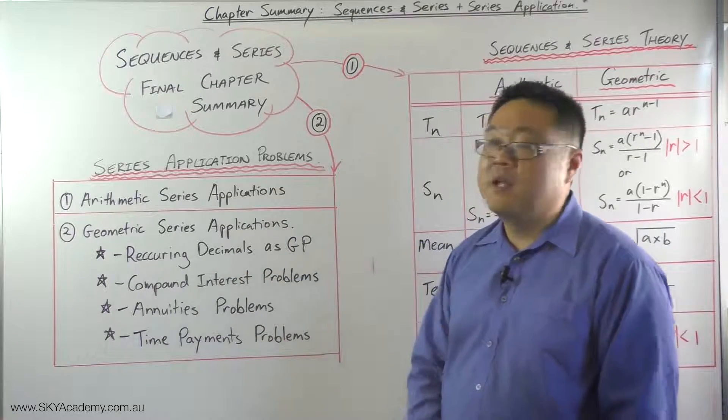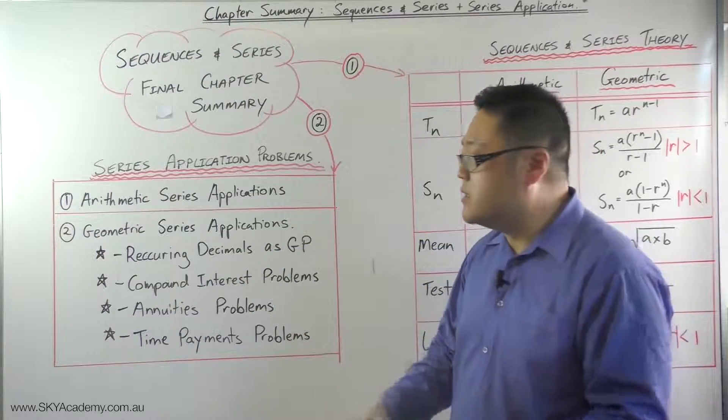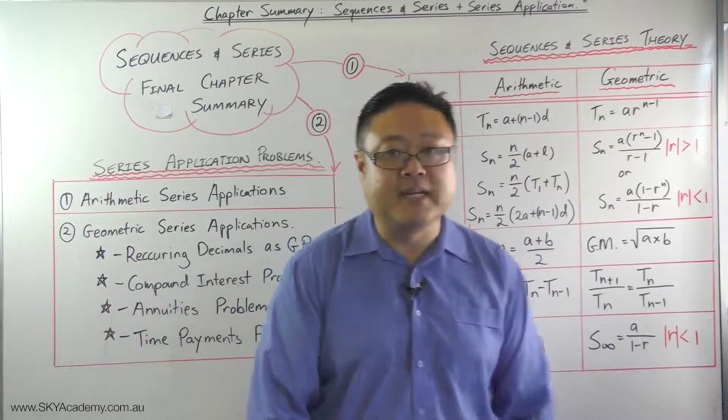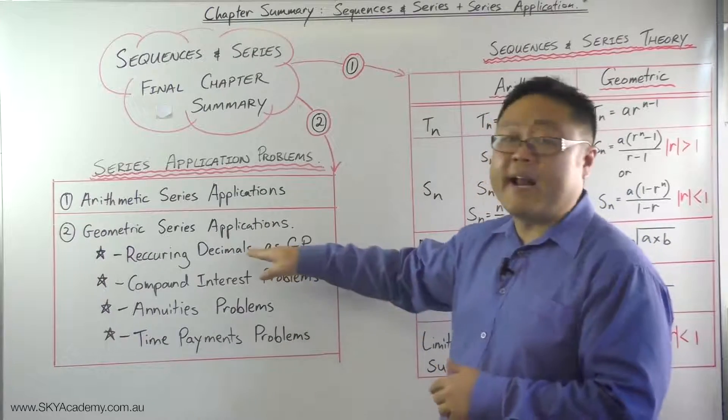Therefore you should be able to do recurring decimal type questions as a limiting sum. And that actually helps us to move from a recurring decimal to a fraction.